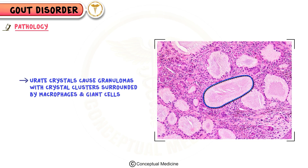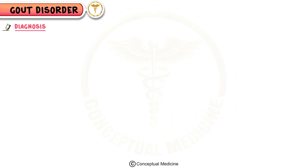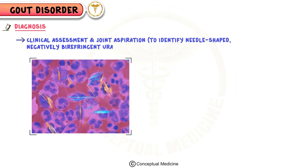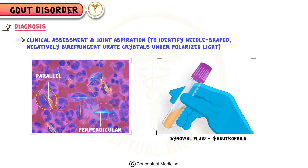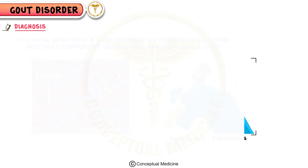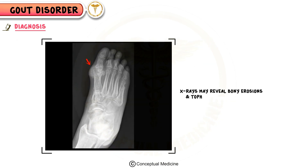Diagnosis involves clinical assessment and joint aspiration to identify needle-shaped, negatively birefringent urate crystals under polarized light, appearing yellow when parallel and blue when perpendicular. Synovial fluid shows increased neutrophils, and X-rays may reveal bony erosions and tophi in chronic cases.